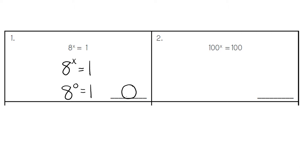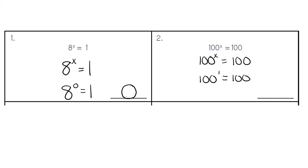In number 2, we have 100, which is our base number, x, which is our missing variable, and the answer is also 100. In this instance, the exponent is going to be a 1 because anything to the power of 1 is itself. So our missing exponent is 1.